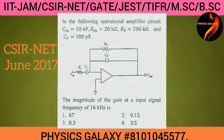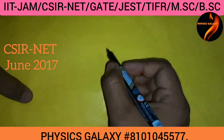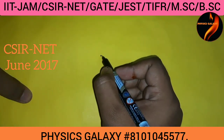Welcome everyone to the channel Physics Galaxy. Today we will solve one electronics question from the CSIR NET exam. You can see the question on the screen. In this problem, you have to find out the magnitude of the gain for the given circuit. Let us quickly draw the circuit diagram.